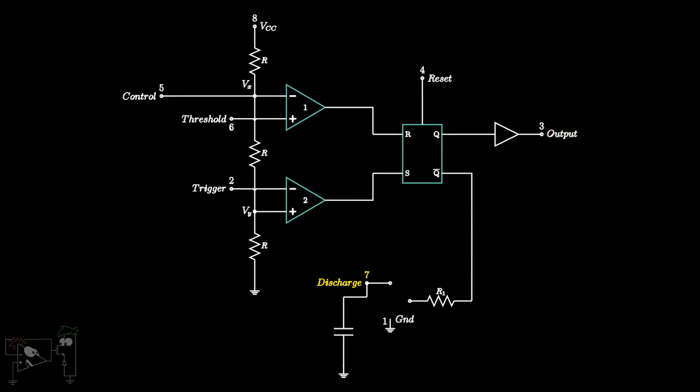The last pin is pin 4, which is the reset pin. It is an active low pin. If activated, the flip-flop output is reset irrespective of the outputs of the comparators. If we do not wish to keep the flip-flop in reset state, we need to keep the reset pin tied to VCC.